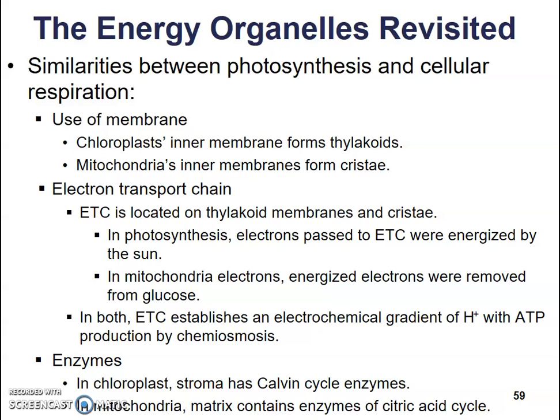Both organelles also use enzymes. In chloroplasts, the stroma contains enzymes that make the Calvin cycle run properly. In mitochondria, the matrix contains enzymes that maintain the citric acid cycle, running it over and over again — and those enzymes are never consumed by the reactions.